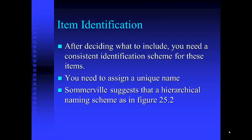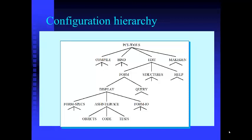Item identification: after deciding what to include, you need a consistent identification scheme for those items and files, and they need to have a unique name. Somerville suggests a hierarchical naming scheme such as the one seen in this figure. Using this hierarchy, each component would have a unique name — for example, PCL tools, edit, form, display, form, IO, input, version 1.